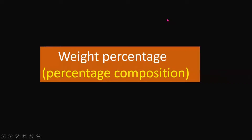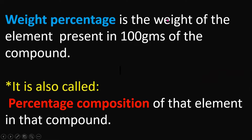Weight percentage is defined as the weight of the element present in 100 grams of the compound. It is also called the percentage composition of the element in that particular compound.